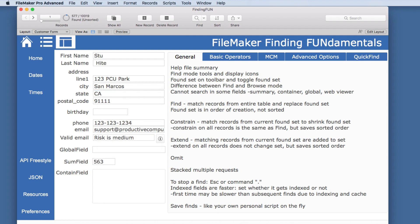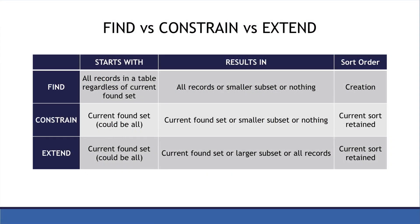Here is a comparison of Find, Constrain, and Extend. Find always starts with all records in the table regardless of the current found set, and results in either all records, a smaller subset, or nothing — and it will not be sorted except for creation order. Constrain starts with the current found set and will result in the current found set, a smaller subset, or nothing, and it does retain the sort order. Extend starts with the current found set and results in the current found set, a larger subset, or all records, and also retains the sort order.